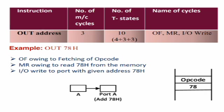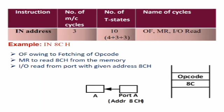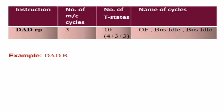Next is the IN instruction with an 8-bit address — for example, IN 8CH. This will require one opcode fetch, one memory read to read 8CH from the memory, and another input/output read to read the contents from the port, which will be copied into the accumulator. Next instruction is DAD RP — this instruction is the direct addition of register pair RP contents to the HL register pair. In this case it requires only one opcode fetch cycle, but because it requires the addition of two 8-bit numbers it will require two bus idle states of 3 T states each, so the number of T states required will be 10.